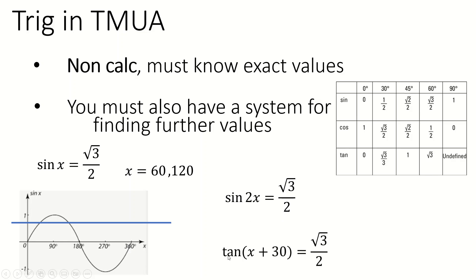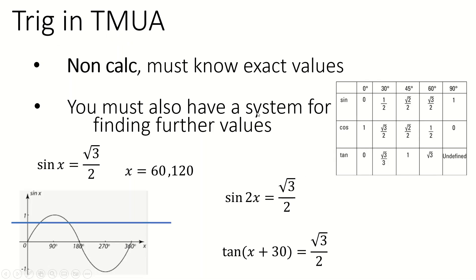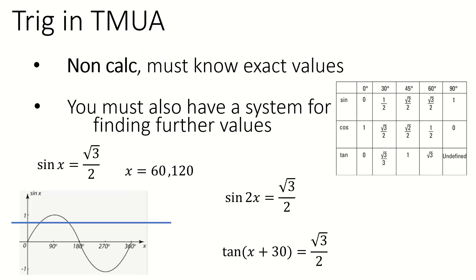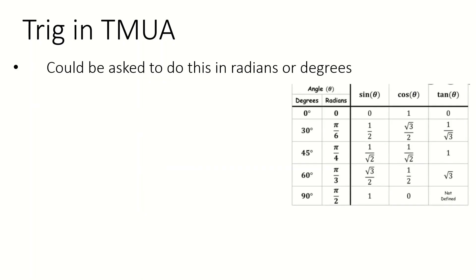It's also worth noting you'd be expected to find tan values in exactly the same way. Even though usually at A-level and certainly at GCSE you're only expected to draw the sine and cos graph, you are expected to draw the tan graph as well in Tamura. You are also expected to do all of this in radians. So anything I just said, although I was using degrees, it applies in radians as well.